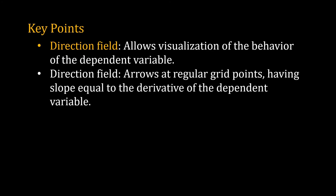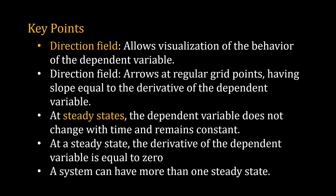The key points of this lecture: we have learned about the direction field. A direction field allows visualization of the temporal behavior of a system. To draw a direction field, place arrows at equally spaced grid points; the slope of an arrow equals the derivative of the dependent variable at that position.